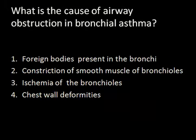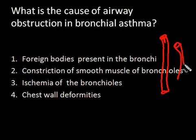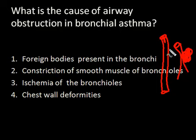The question asks what is the cause of airway obstruction in bronchial asthma. When looking at the bronchioles, obstruction can occur in three ways: something inside the bronchial causing blockage, the bronchial wall narrowing, or something compressing it from the outside like a tumor. Those are the three possible ways that obstruction can occur.